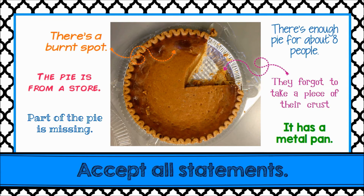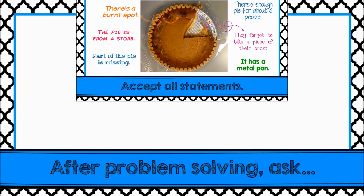Seeing numbers might be a clue, but something can be mathy without numbers. For example, a statement about part of a pie missing — I would say this is mathematical because a part is a fraction. This process of making statements and discussing the math in them is a great way to allow all students access to a problem. It breaks down barriers and engages everyone. However, we must continue this process over time so students can become more purposeful and mathematical in their thinking.